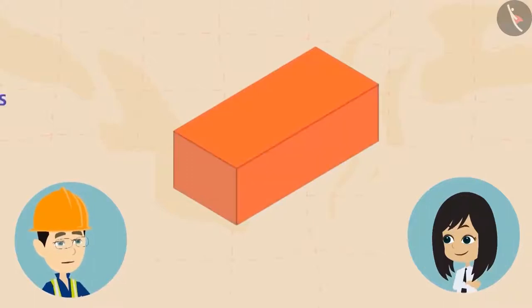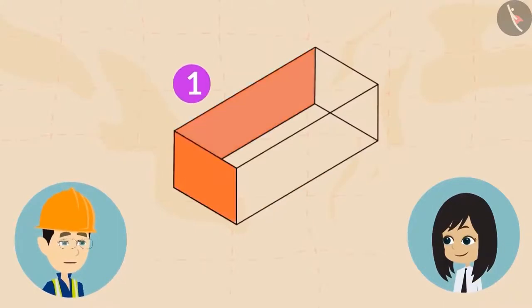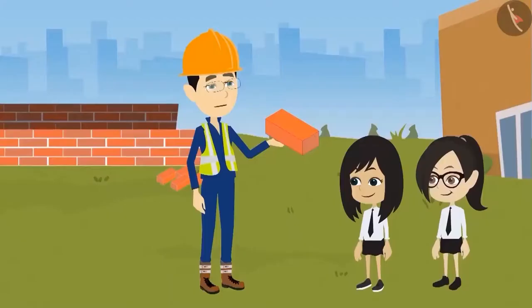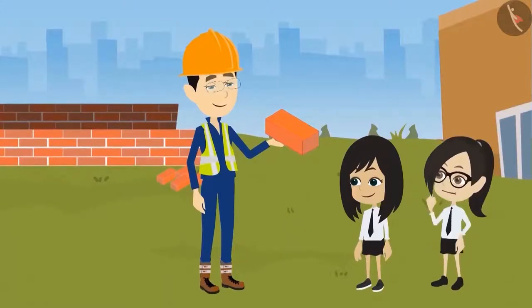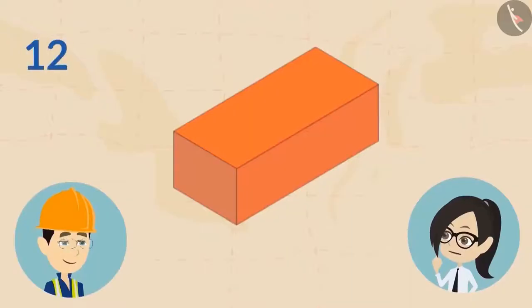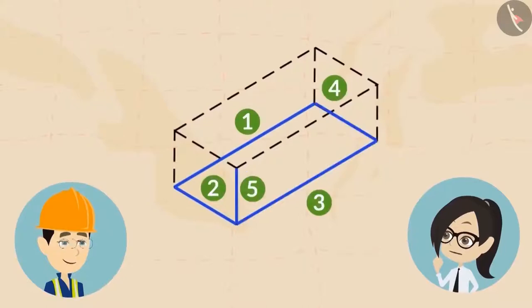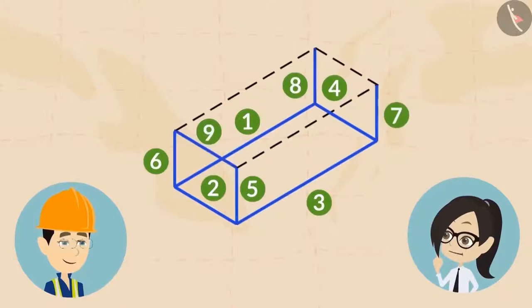Every brick has six faces: one, two, three, four, five, and six. Now, can you count the edges of this brick? It has twelve edges: one, two, three, four, five, six, seven, eight, nine, ten, eleven, twelve.